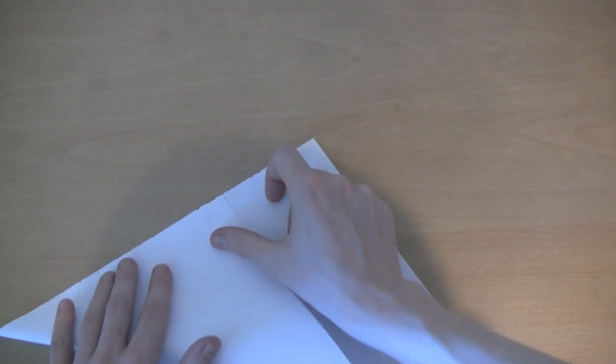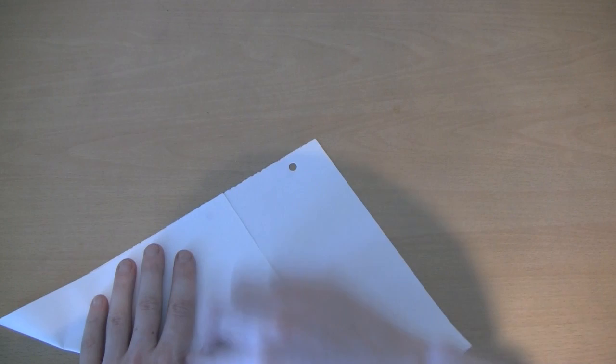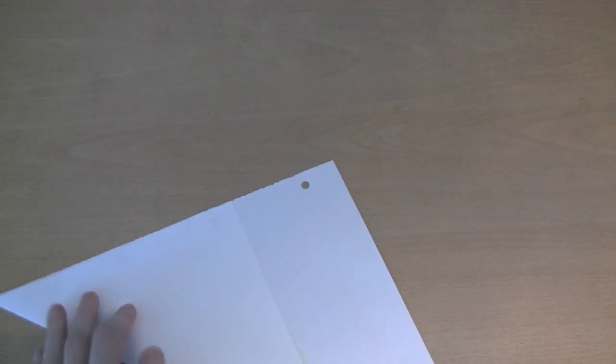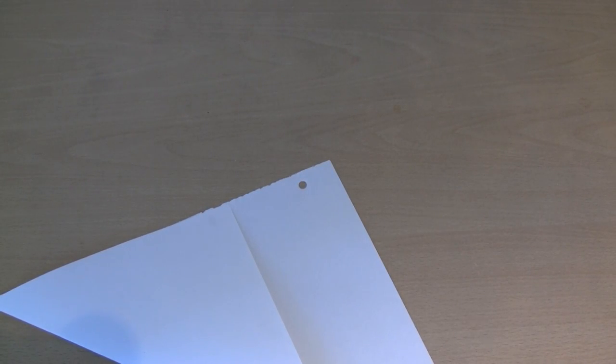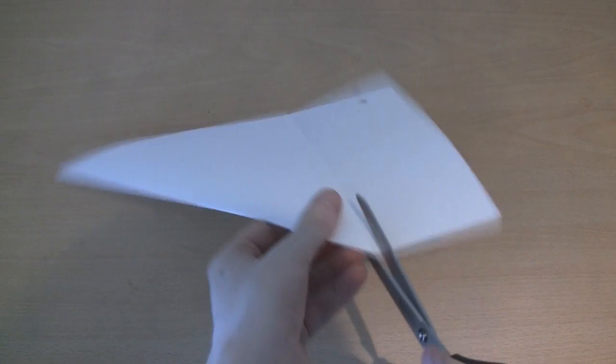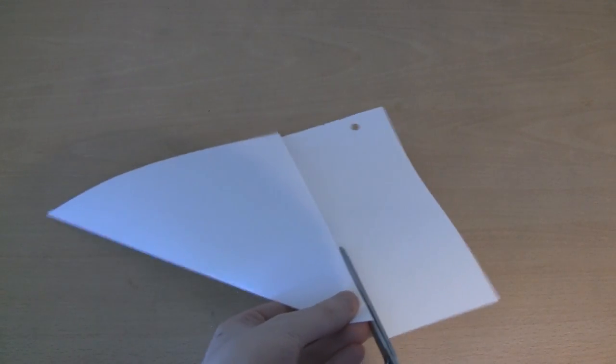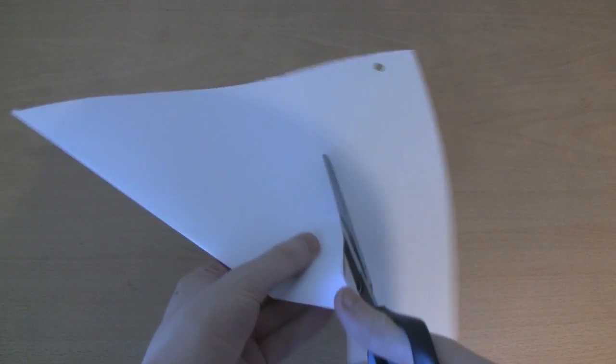So first of all, you need to make a square. You can do this with any piece of paper. You just give it a fold, just like that. And to make it a square, let's use our scissors. I'll just give it a cut up here.